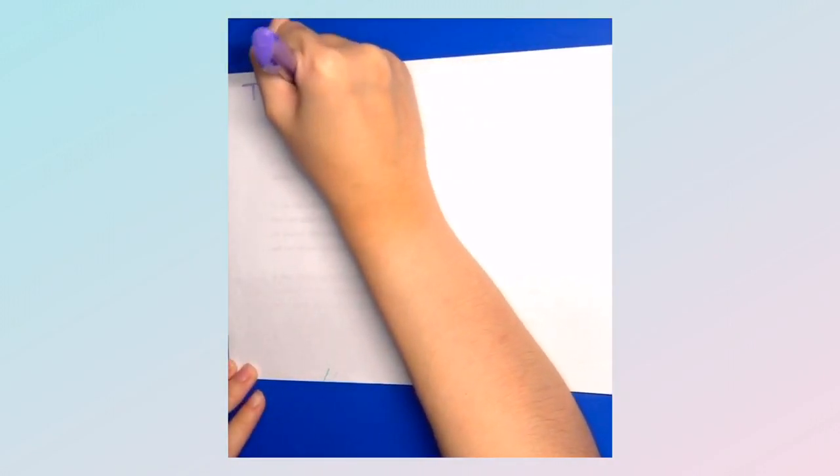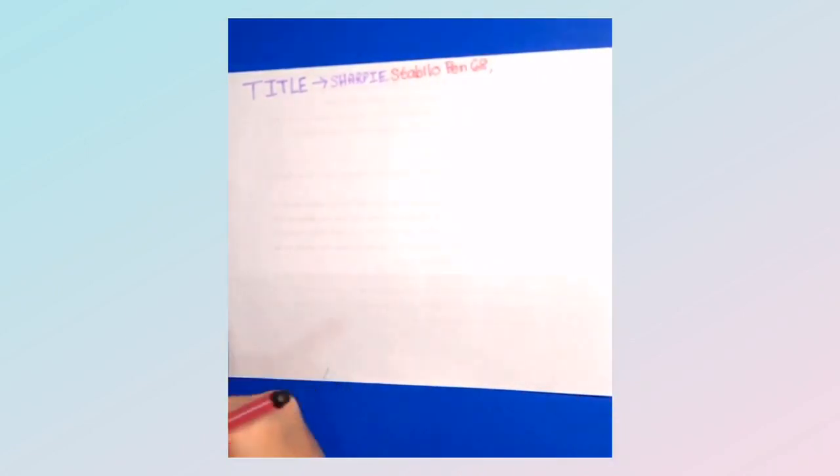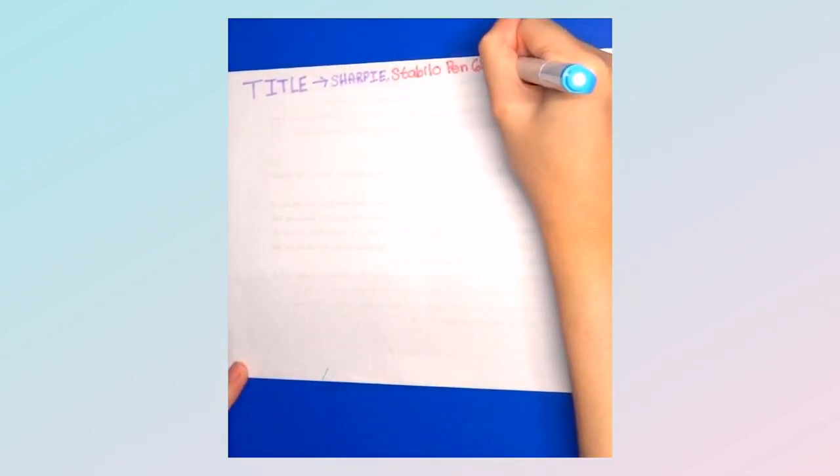So this is how I take notes on my physical notebook. First, I write the title in all caps and I usually use a highlighter for this. My highlighters that I usually use are Sharpie, Stabilo Pen 68, and the Zebra Mildliners.